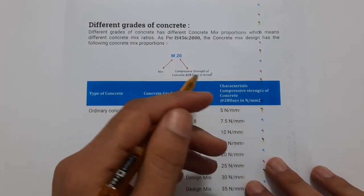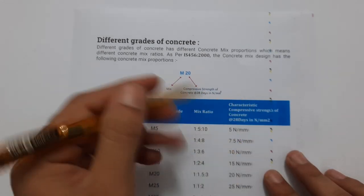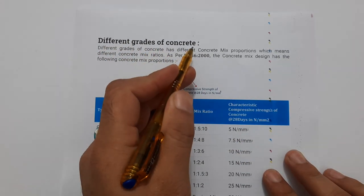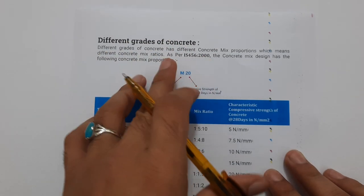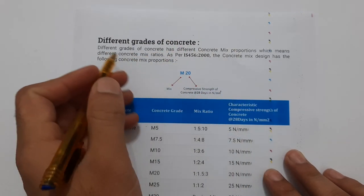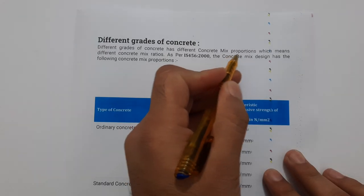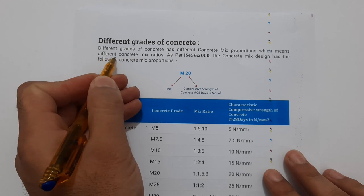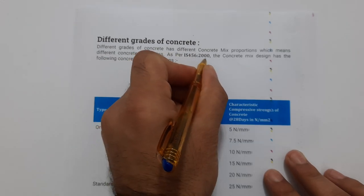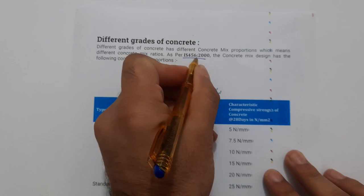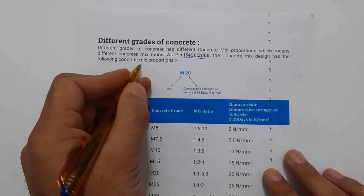Assalamualaikum guys, welcome back to Civil Engineers YouTube channel. Today in this short video lecture, I will guide you through different grades of concrete. Let's get started. Different grades of concrete have different concrete mix proportions, which means different concrete mix ratios, as per IS 456:2000. From the reference of IS 456:2000, the concrete mix design has the following concrete mix proportions.